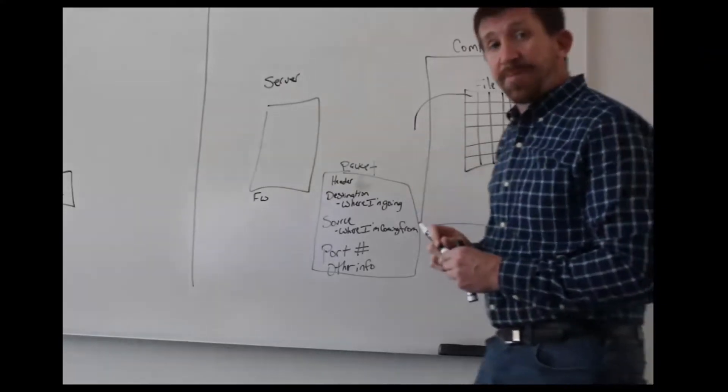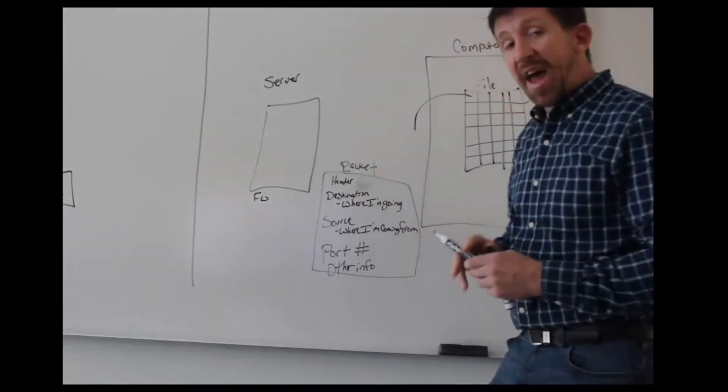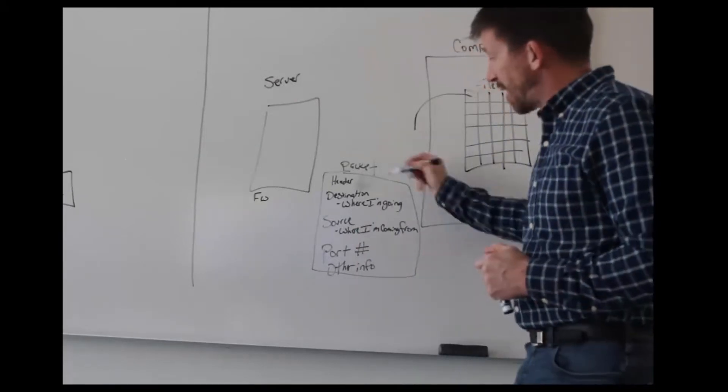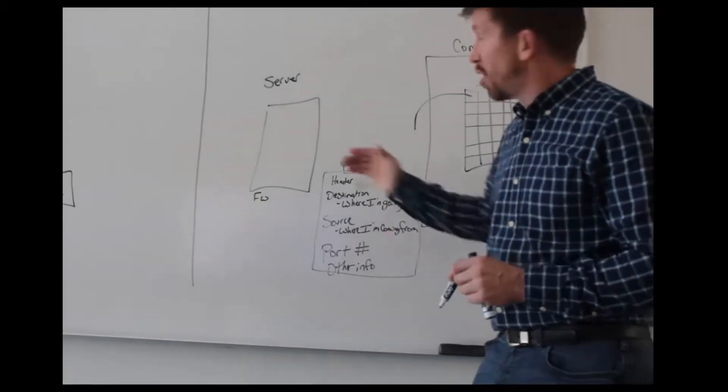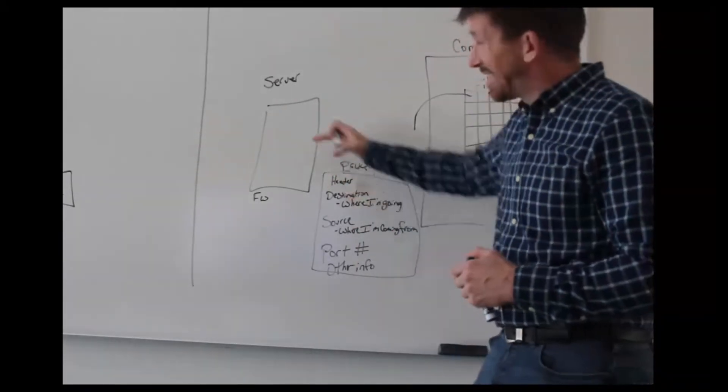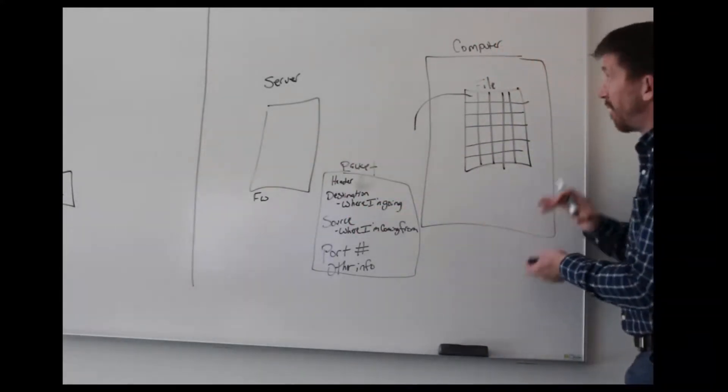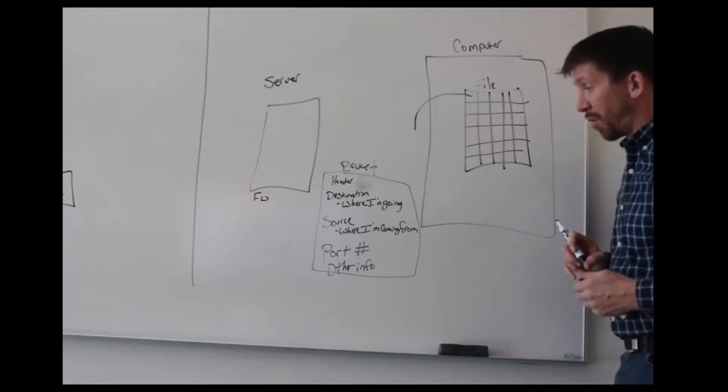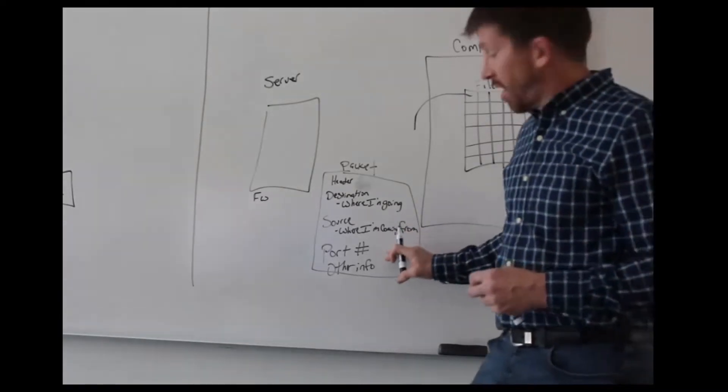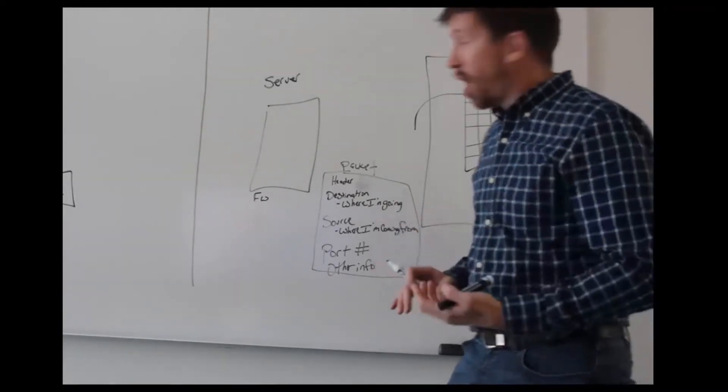Inside of each packet, we have a header. That header has a bunch of information. Some of that information includes the destination - where I'm going. In this scenario, it's the server. The source - where I'm coming from. In this scenario, it's the computer. What port am I communicating on? And then it has other information.